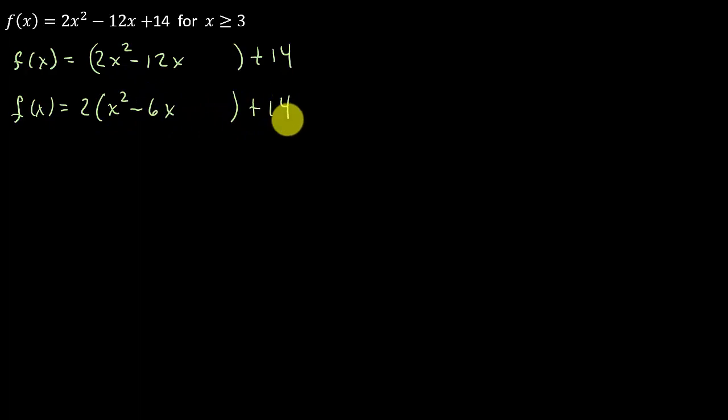Okay, and then remember, I have to half the 6, so half of 6 is 3, and then I square 3. That gives me 9, so that's plus 9. And since I added 9 in here, I'm going to have to come out here and subtract 18. Now, why did I subtract 18? Well, I added the 9 in here, but that's really like adding what? 2 times 9, which is 18. So since I added 18, I have to come out here and subtract 18.